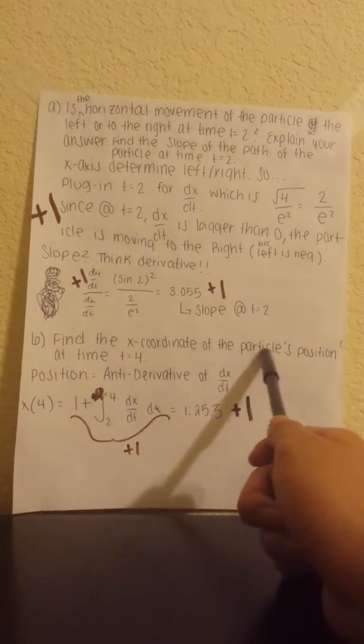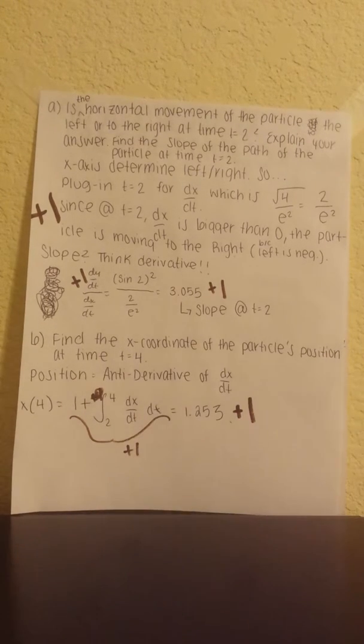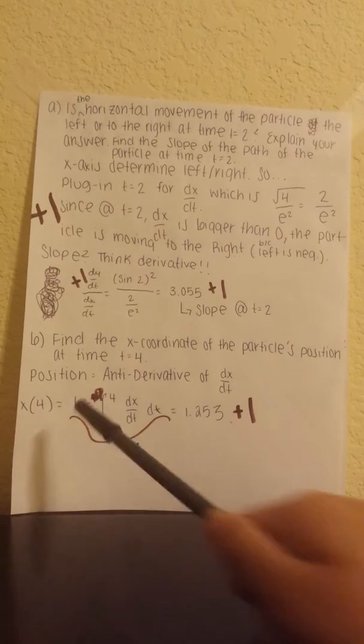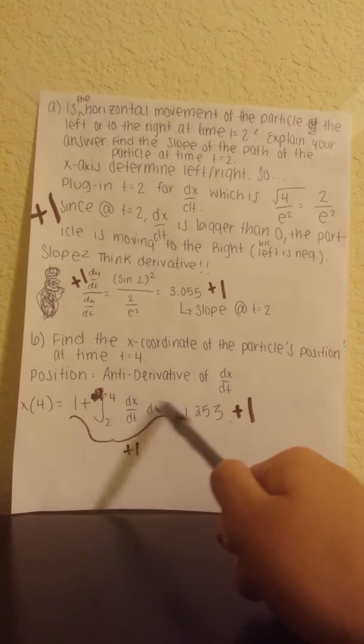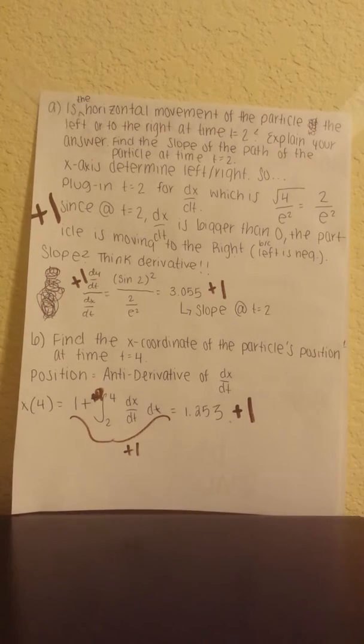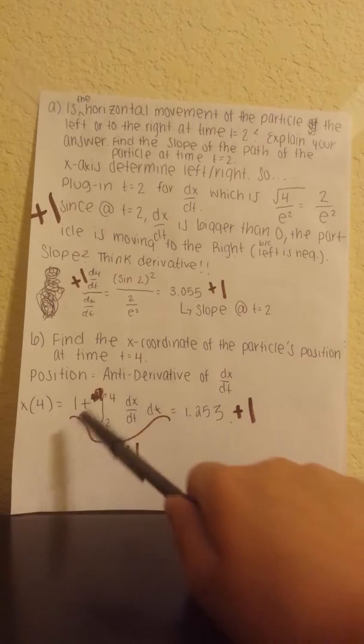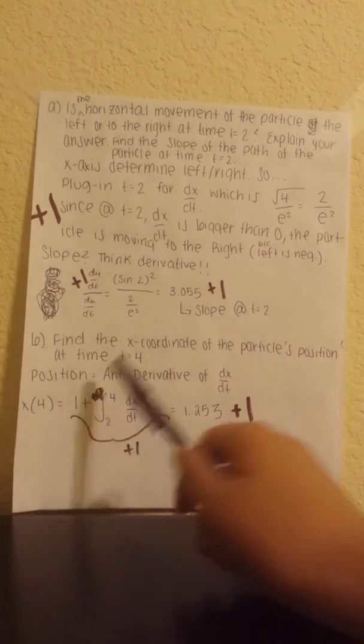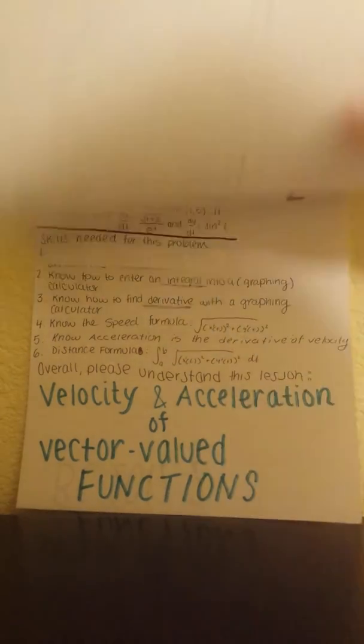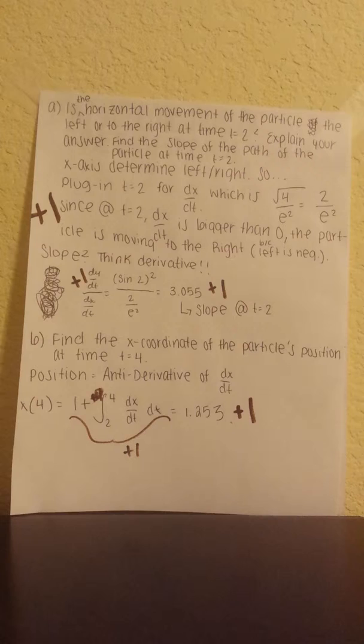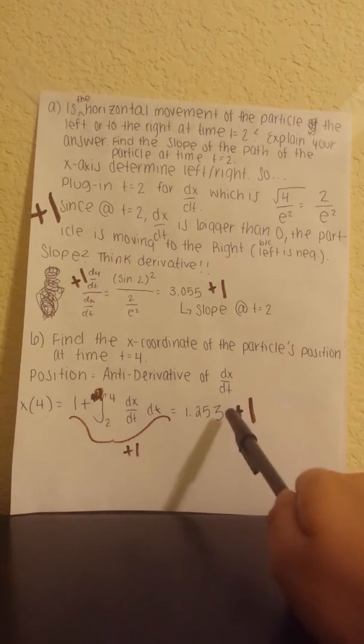Next, part B. Find the x-coordinate of the particle's position at time t equals 4. The position is the antiderivative of dx/dt. If you remember, dx/dt was the velocity and antiderivative means we would be going backwards for the position. So that would be 1 plus integral 2 to 4 of dx/dt dt, and then we would get 1.253 when we punch it into the calculator. If you're wondering why we put a 1 right here, it's because in the problem it said that for the x-coordinate, we're starting at 1. You get one point for the integral and one point for your final answer.